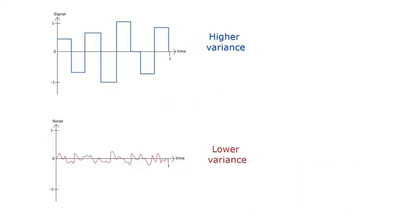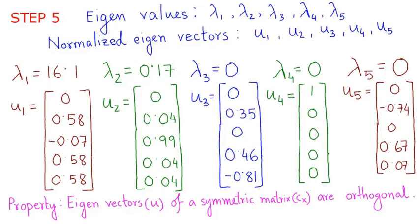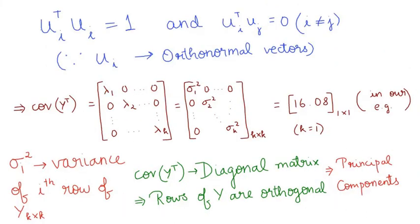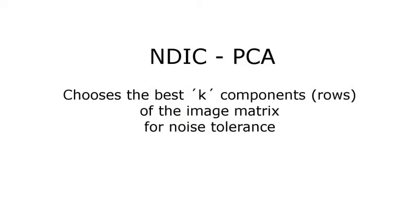In general, a useful signal's variance is much larger compared to the noise variance. By rearranging the eigenvectors in step 5, we make sure that the covariance matrix of Y transpose has the largest K variances along the diagonal. These correspond to the image rows with the largest AC power. Thus, we choose the K best components for noise tolerance.